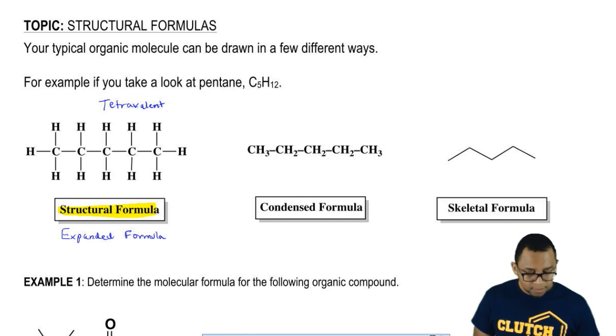So here if you take a look, each carbon in the center is making four bonds in some way, either by making those bonds with hydrogens or with carbons around them. They're all making four bonds.